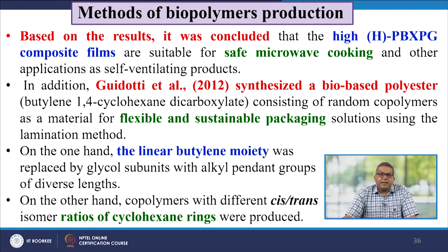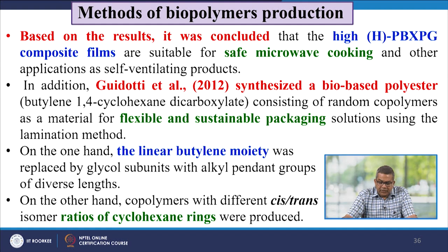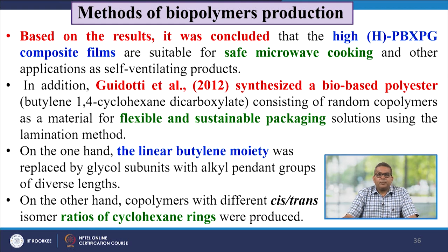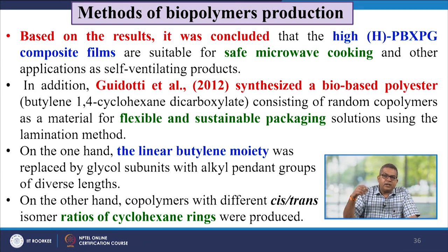Based on various results, it was concluded that high PBSPG composite film is suitable for safe microwave cooking and other applications as a self-ventilating product. One scientist studied random copolymers as material for flexible and sustainable packaging solutions using lamination methods. The linear butylene moiety was replaced by glycol subunits with alkyl pendant groups of diverse length, and copolymers with different cis-trans isomer ratios of cyclohexane ring were produced.